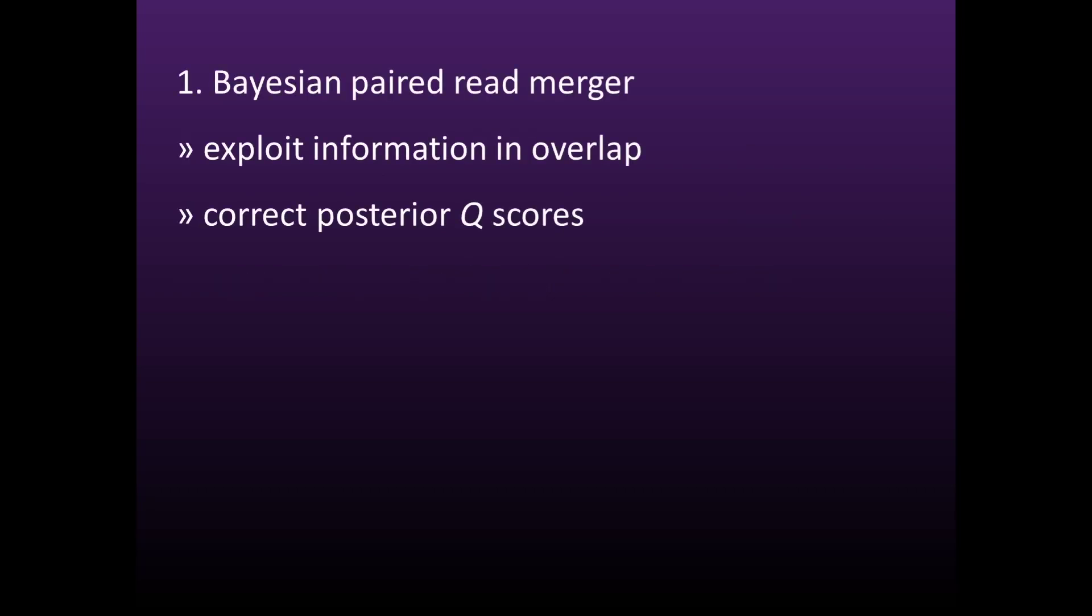To fully exploit quality score information, you should start by using a Bayesian paired read merger, then use an expected error filter. This procedure works very well, as shown by testing on mock communities with known composition.